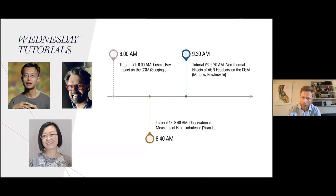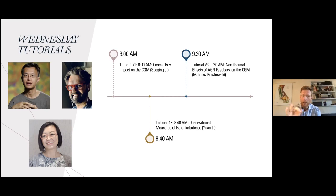On Wednesday we will have three tutorials. Last week we had four and it seemed a little bit crushed, so this week we'll have three. Sucheng Ji is going to talk about cosmic rays and their impact on the CGM. Mateusz Ruszkowski will talk about AGN and non-thermal effects on the circumgalactic medium. And Yuan Li is also going to talk about observational measures of halo turbulence. I'm excited for that.